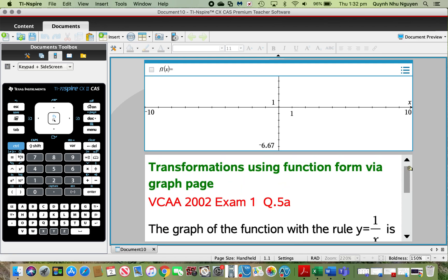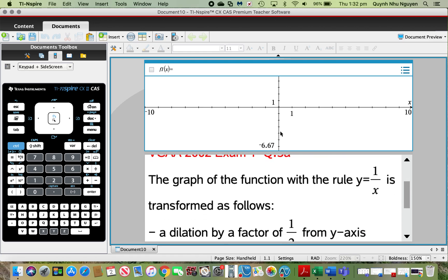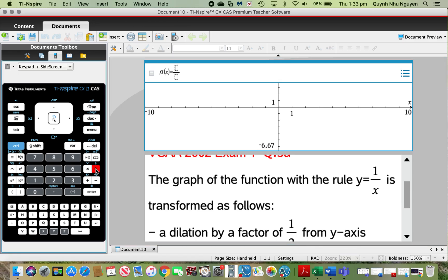So what I would like you to do first is to open up a graph page. As you can see here, I've got my f1 ready to go. So in your f1, what I would like you to do is to type in the original function given. So my original function is y equals 1 over x. Enter.